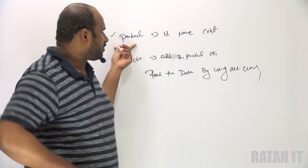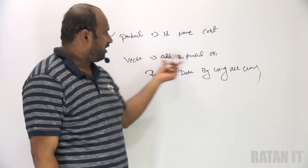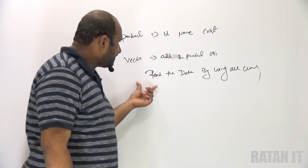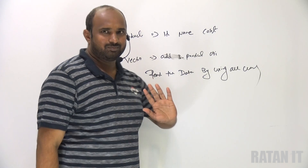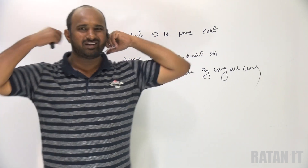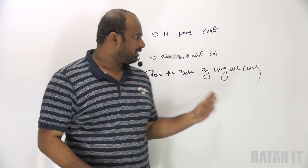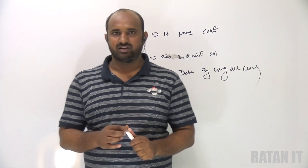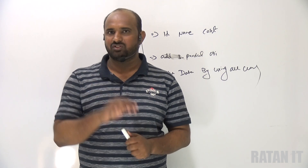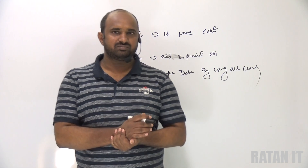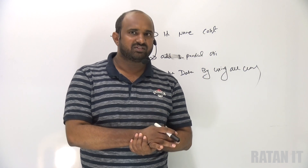So to summarize: create the Product class with id, name, and cost; use the constructor to initialize the values; add three objects to the vector; and print the data using all cursors. If the requirement is clear, just pause the video and try to complete this example. After completion of the example, start the video.